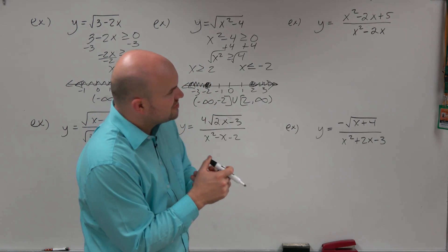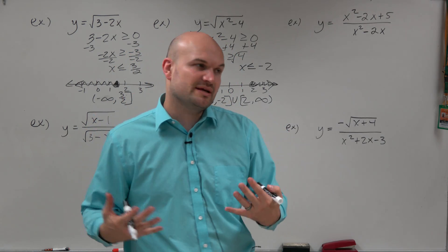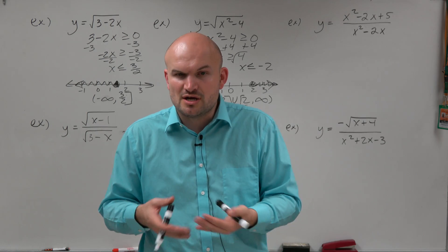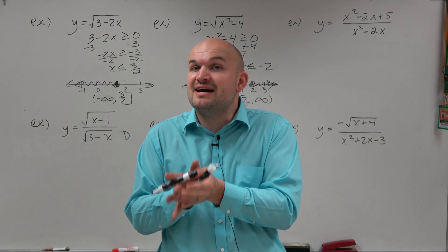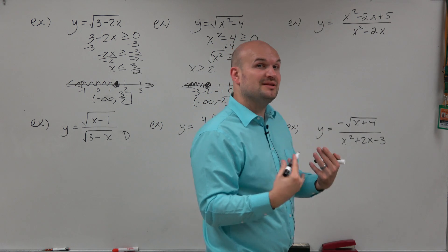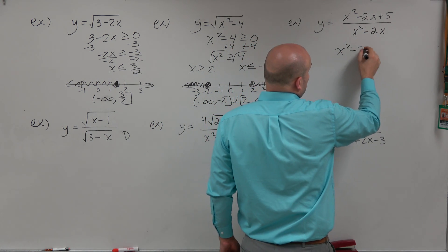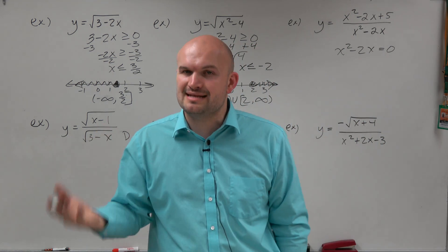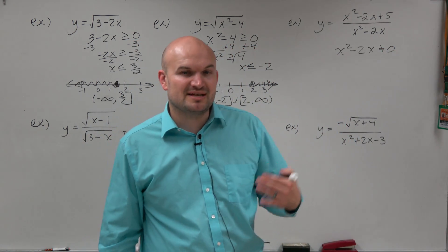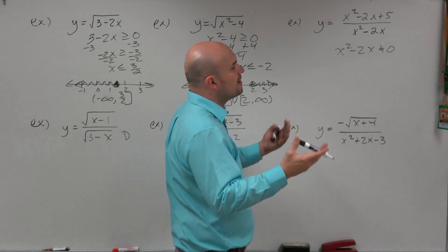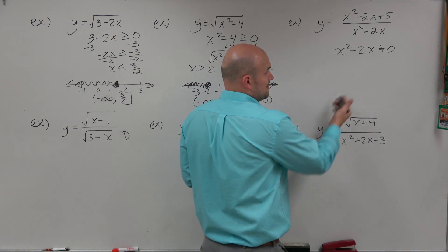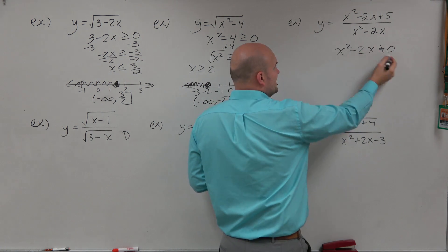The next example is just a rational function. It's important to remember that when dealing with rational functions, the domain is restricted for the values of x that make the denominator equal to 0. So as long as we don't have a radical in the numerator, all we need to do is set the denominator equal to 0. We want to find the values of x that make the denominator 0 — equivalently, find the values that cannot be in the domain.